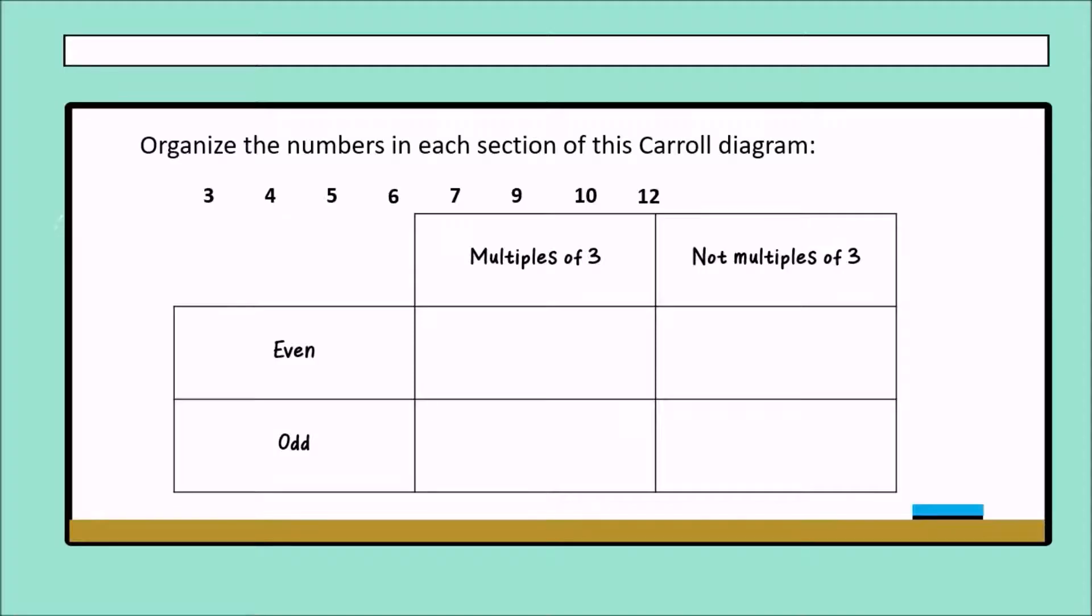Now, in the first row, we have even numbers. In this row will appear even numbers. And finally, in odd, in the last row, will appear odd numbers.